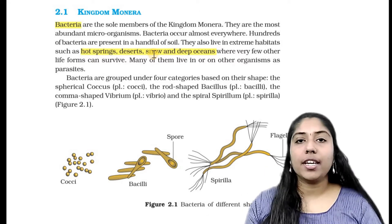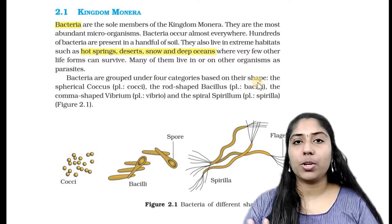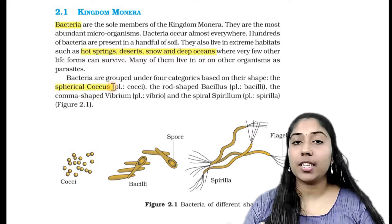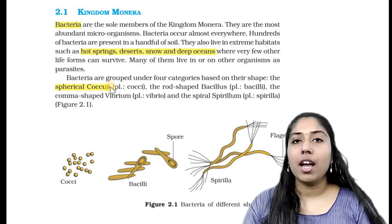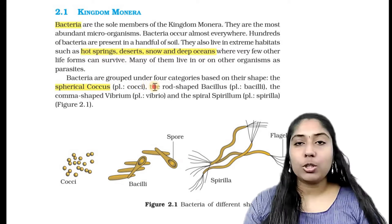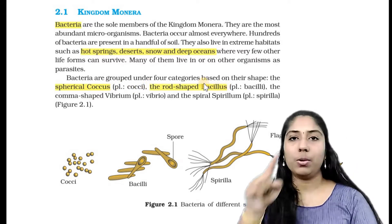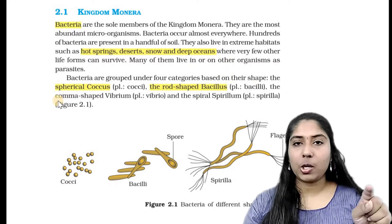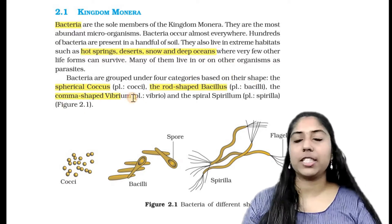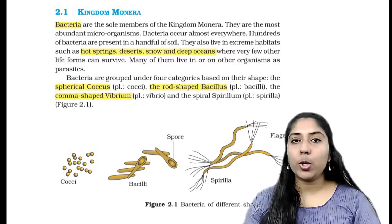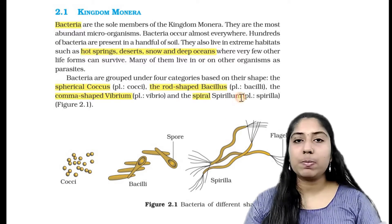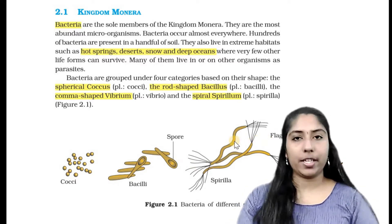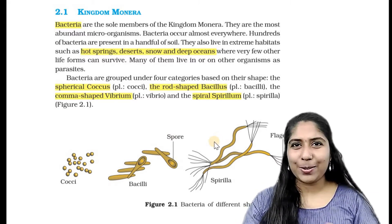We can divide bacteria into groups based on their shape. First, spherical — cocci — a round structure. Second, rod-shaped — bacillus. Third, vibrios. Next, spiral-shaped — spirillum.